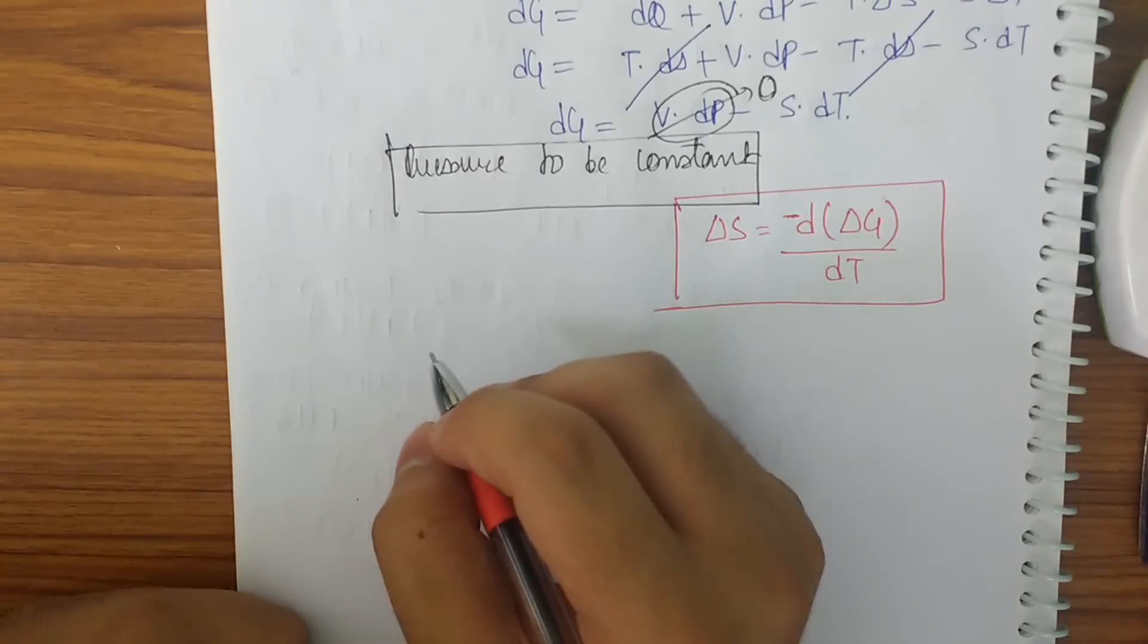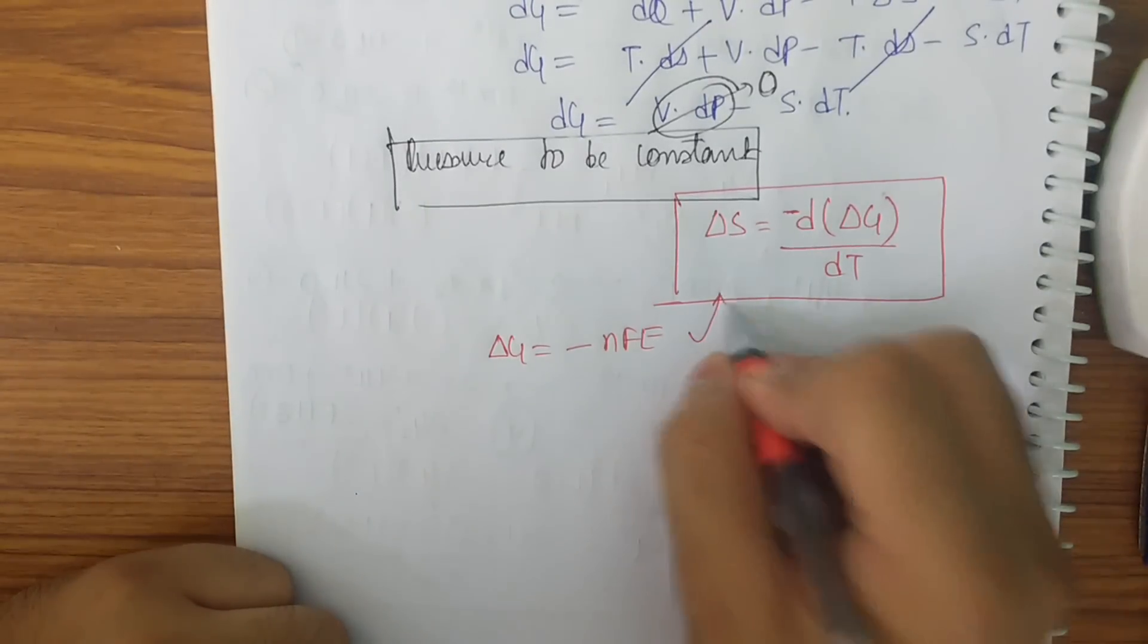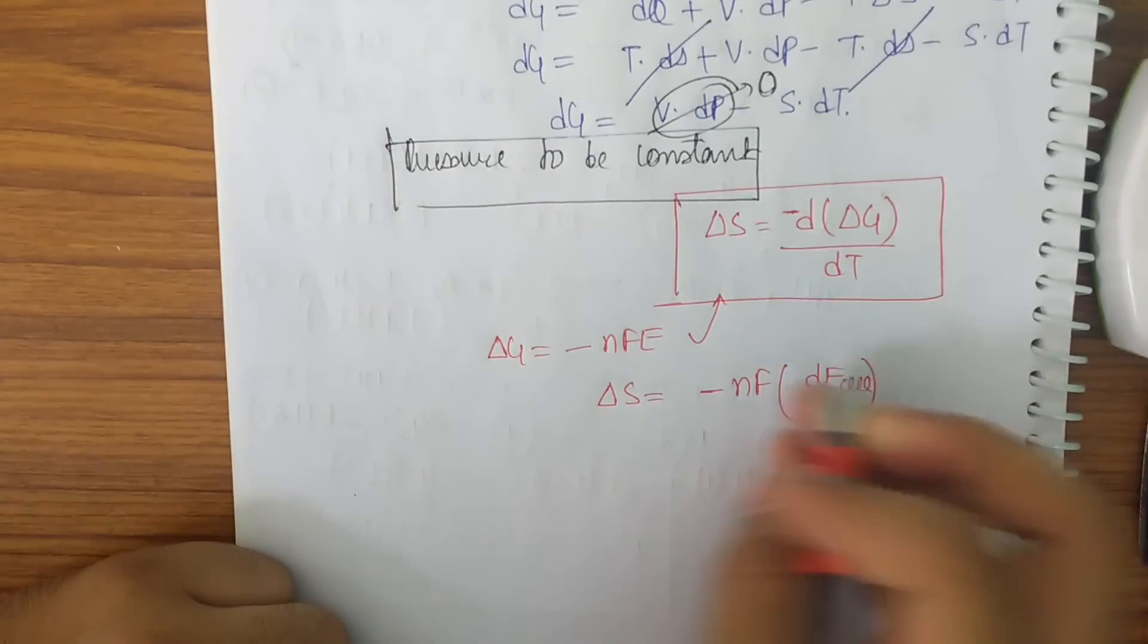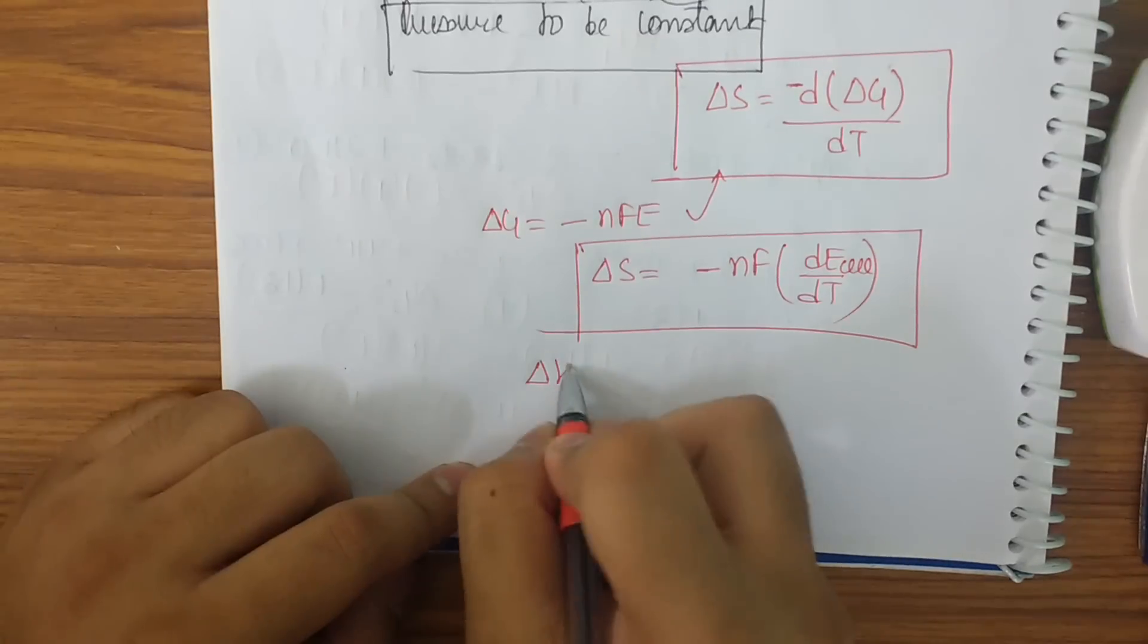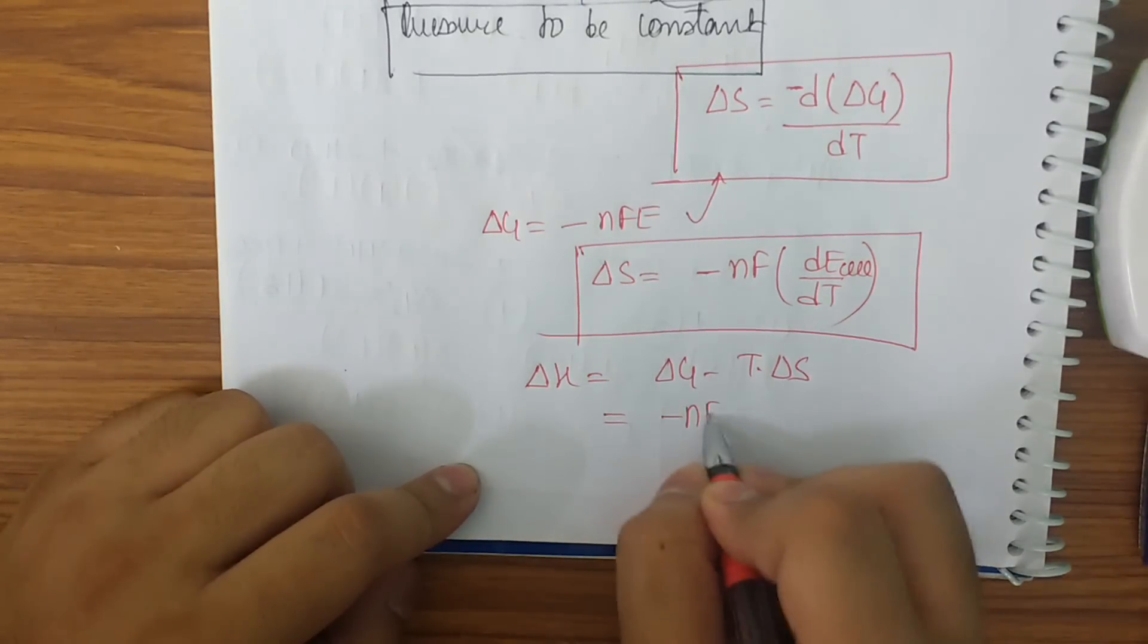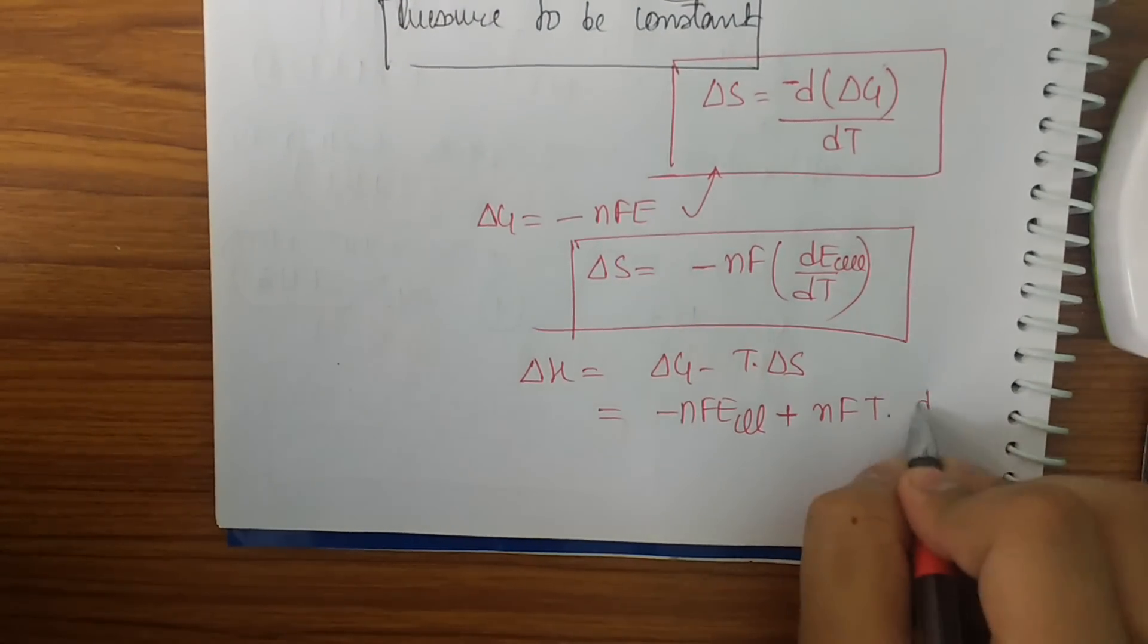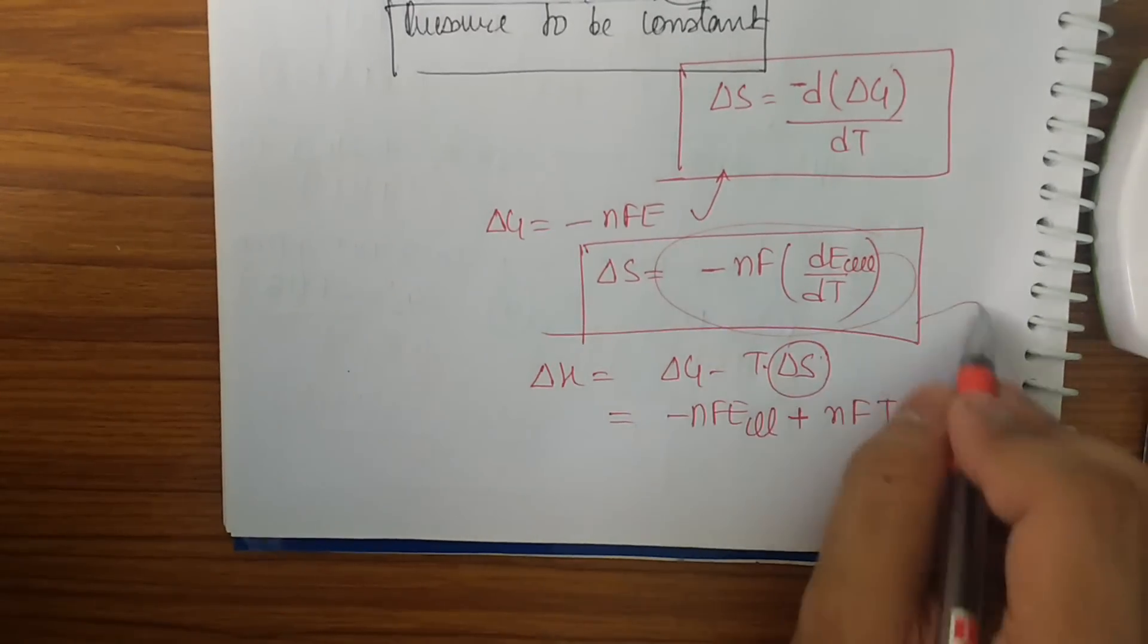We also know from the electrochemistry part that delta G is equal to minus NFE. Putting this here, so I get delta S to be minus NF DE by DT. DE means DE of the cell basically. So this is the way we can write entropy in this form. Now we also know that delta H is equal to delta G minus T into delta S. We can replace delta S to be minus NFE of cell and minus T into delta S can be written to be plus NFT into DE of cell by DT. Just replacing the S value here.